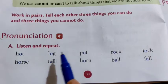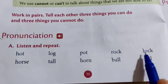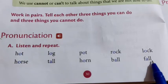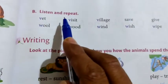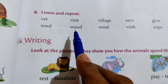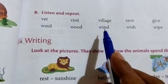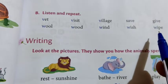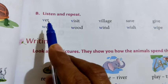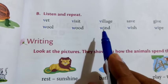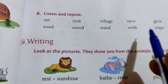Now next page: listen and repeat. Wet, wool, visit, wood, village, wind, sail, wish, give, while. Once again read with me: wet, wool, visit, wood, village, wind, sail, wish, give, while.